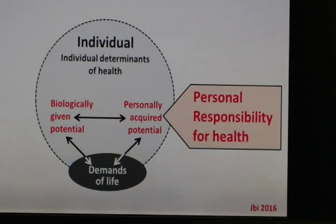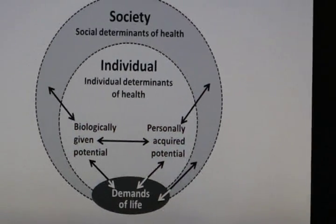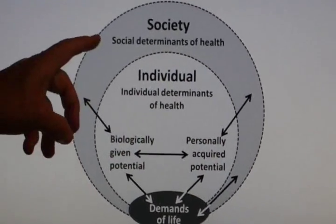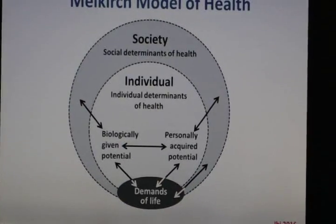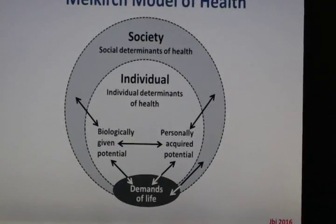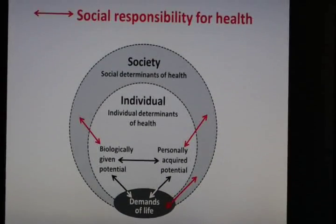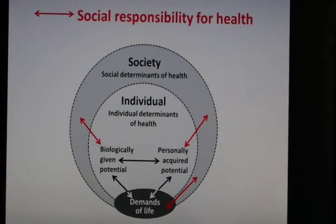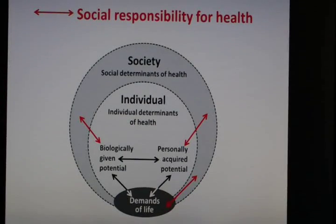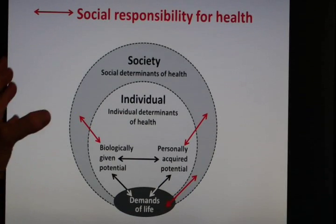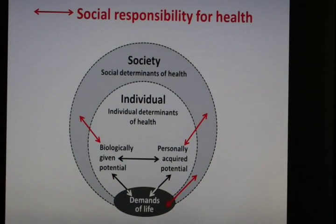Around the individual there is the society with the so-called social determinants of health, and society also must assume responsibility for health. You can see this here with the three double arrows. If you look at that picture you immediately recognize that the factors that determine health have become already much more complicated.